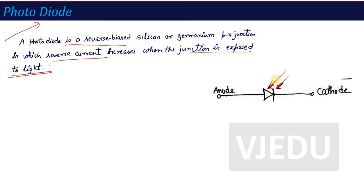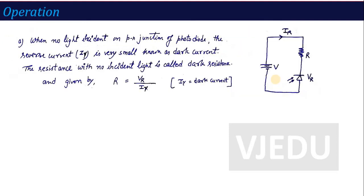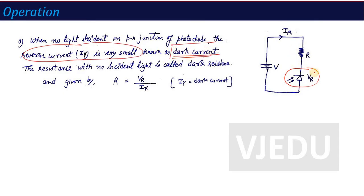If I talk about the operation: when you connect the photodiode in your circuit and no light is incident, or the light intensity is very low, a very small reverse current flows — this is known as dark current. As you can see, this photodiode is in reverse bias condition — the battery's positive terminal is connected to the negative terminal of the diode. So in reverse bias, when light intensity is very low, the reverse current that flows is very small and is known as dark current.